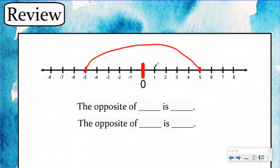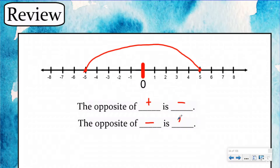Here we have positive five, which is one, two, three, four, five units to the right of zero. And then we had negative five, which is one, two, three, four, five units to the left of zero. We said the opposite of a positive is a negative and the opposite of a negative is a positive, because you had to be on the opposite side of zero and be the same amount of units away.